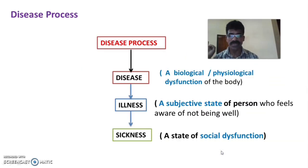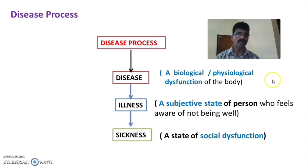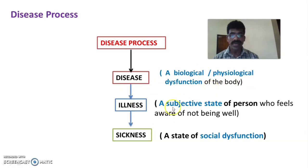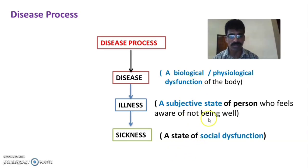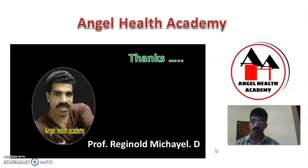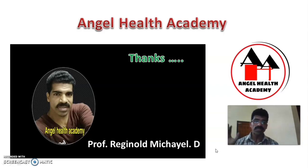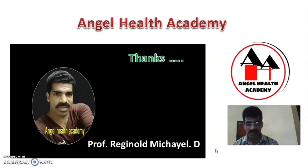So, now we understand what is meant by the disease process: disease means a biological or physiological dysfunction of the body; illness is a subjective state of a person who feels aware of not being well; and sickness is a state of social dysfunction. So far we have discussed the concept of illness — covering disease, illness, and sickness. Hope this video benefits your studies and exams. Please like, share, and subscribe to the channel. Stay tuned with Angel Health Academy for the next academic video. Thank you.